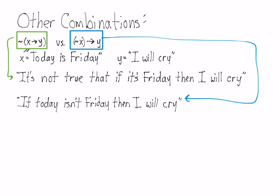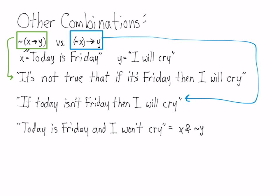Each one of those statements means different things. Another possible sentence is 'today is Friday, and I won't cry.' The notation for that would be x and not y. However, notice that this means the same thing as the first sentence — the negation of a conditional means the same thing as the conjunction shown next to it.